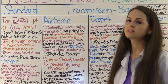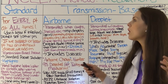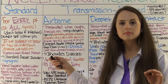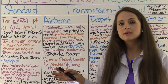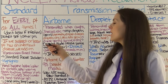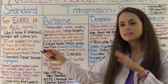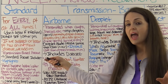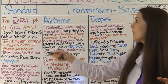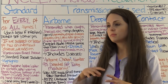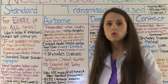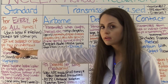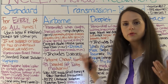Standard precautions are precautions that we take with every single patient at all times, because we don't know what they have and they could potentially have something we're not aware of yet. We do this to protect ourselves and to protect other patients. If we suspect or know that a patient has an infectious disease, we will add on transmission-based precautions — for example, airborne for chicken pox, or droplet for whooping cough.